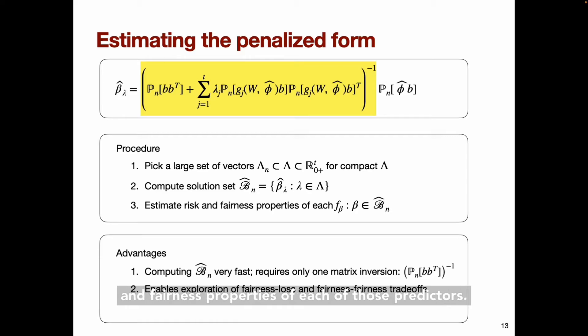The advantage of this setup is that this big highlighted matrix inversion that defines beta hat can be computed as a series of rank one updates to an initial inverted matrix. This means that we can compute the whole solution set while performing only one matrix inversion. This fast computation allows users to efficiently trace out paths in various fairness accuracy spaces, as we'll see shortly.